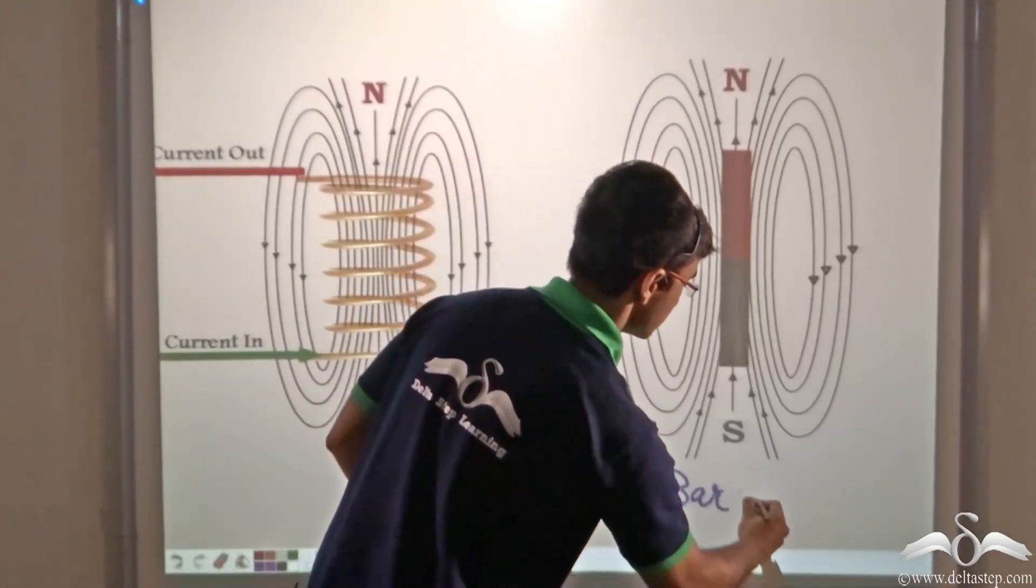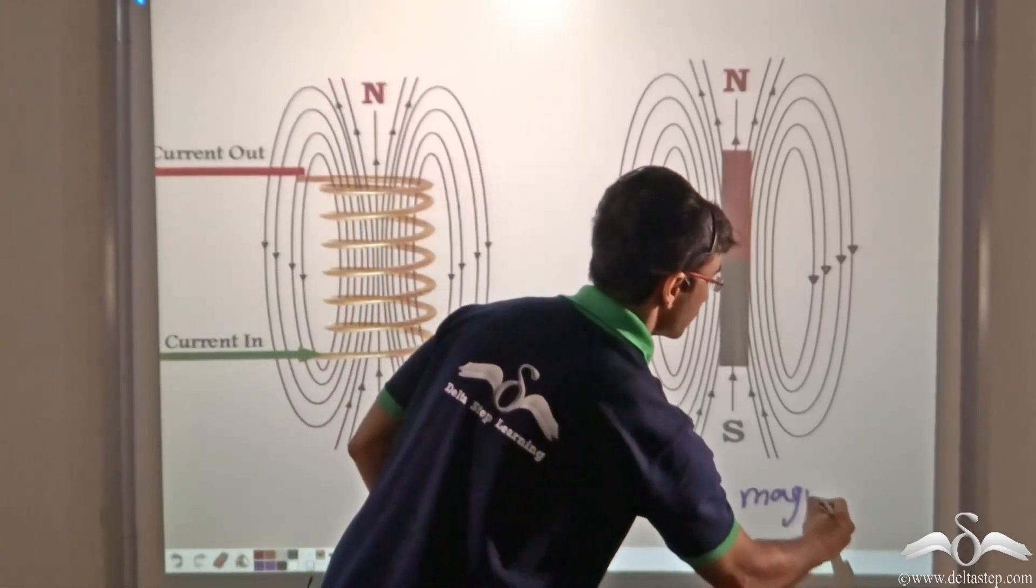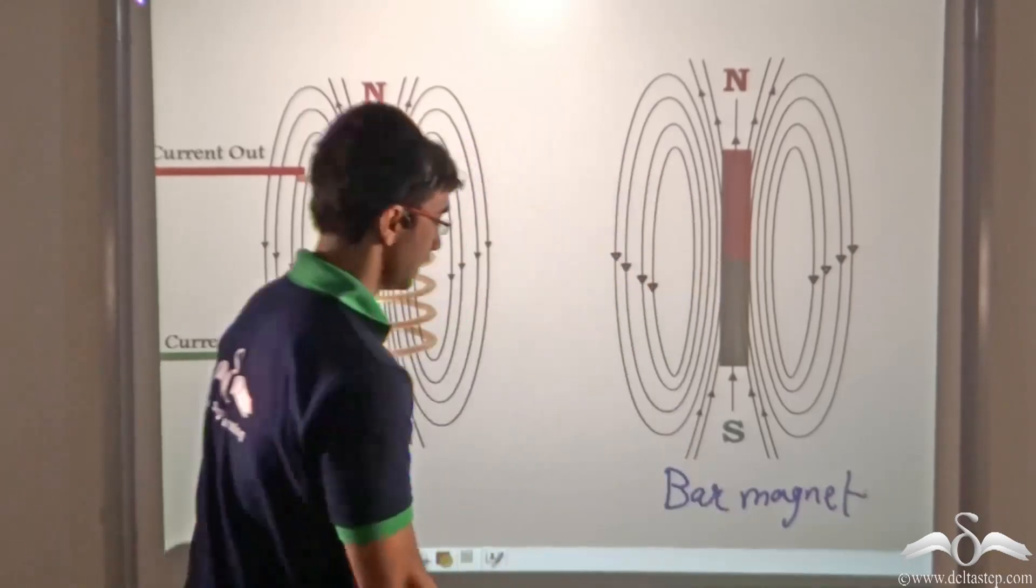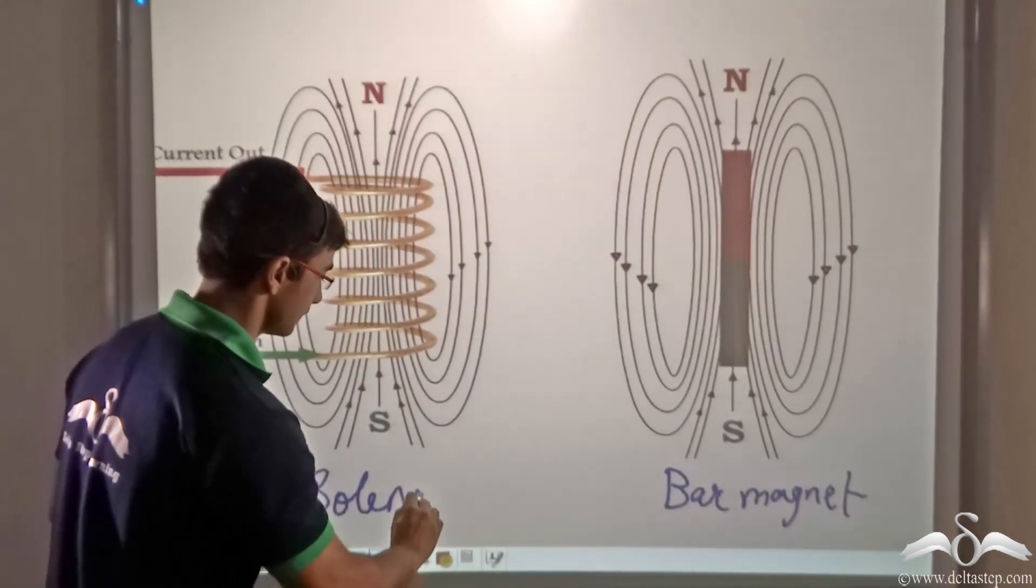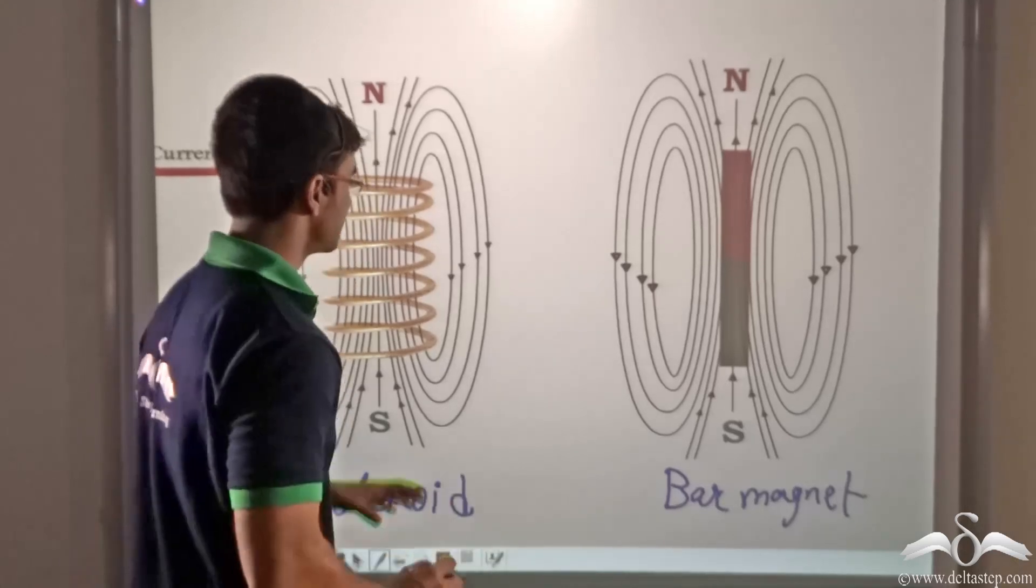This solenoid has field line configuration that is very similar to that of a bar magnet. So over here we have a bar magnet and over here we have a solenoid. So as you can see, the field lines...